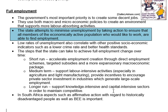In order to decrease the crime rate, one strategy is to create employment for unemployed people. It also leads to better health standards because when people have an income, they can afford to go to the doctor and get the medicine they need. Steps the government can take to achieve full employment — or to reduce unemployment — in the short run include accelerating employment creation through direct employment schemes, targeted subsidies, and a more expansionary macroeconomic package.